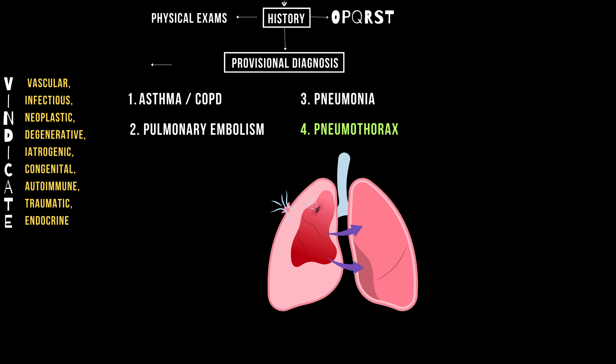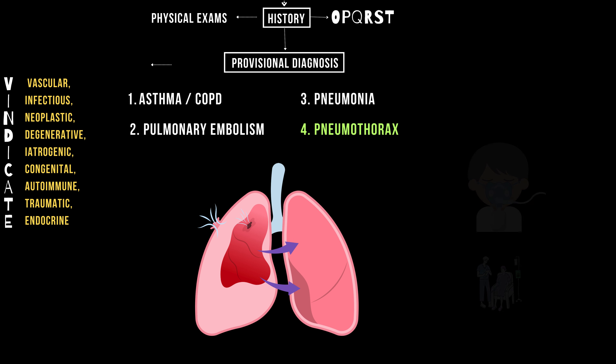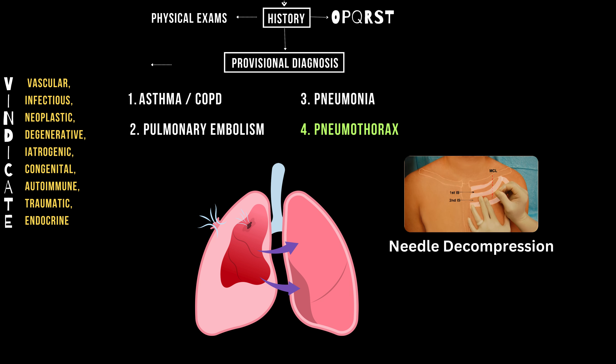Pneumothorax presents with absent breath sounds on one side and sudden sharp chest pain. For a small pneumothorax, observation and supplemental oxygen might be sufficient. For a large pneumothorax, perform needle decompression and insert a chest tube.